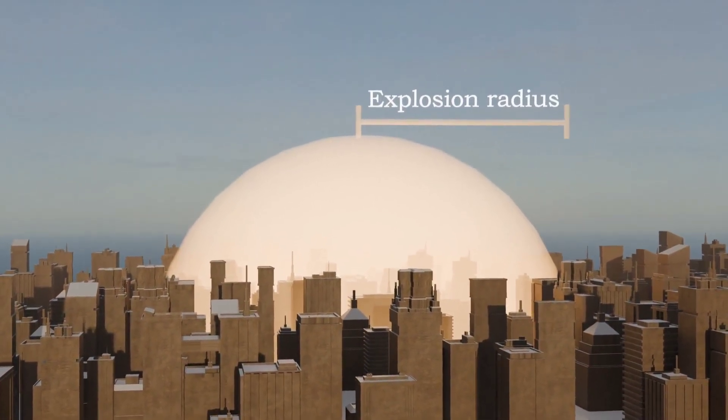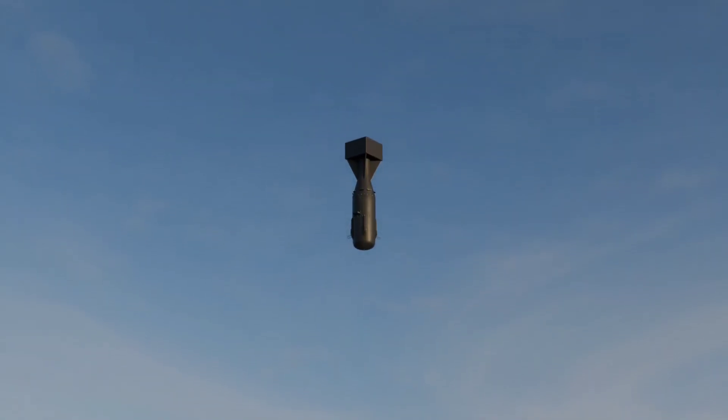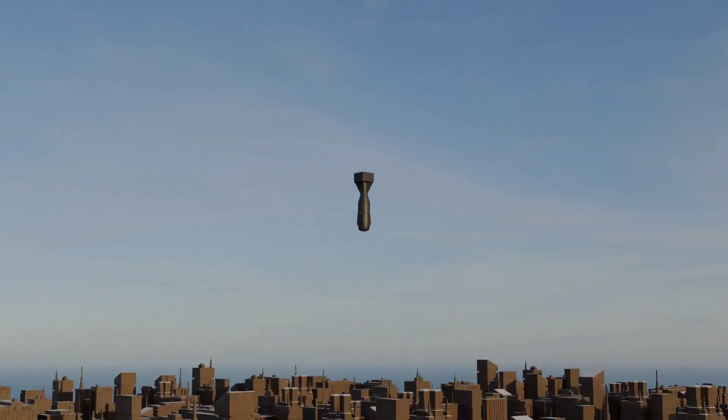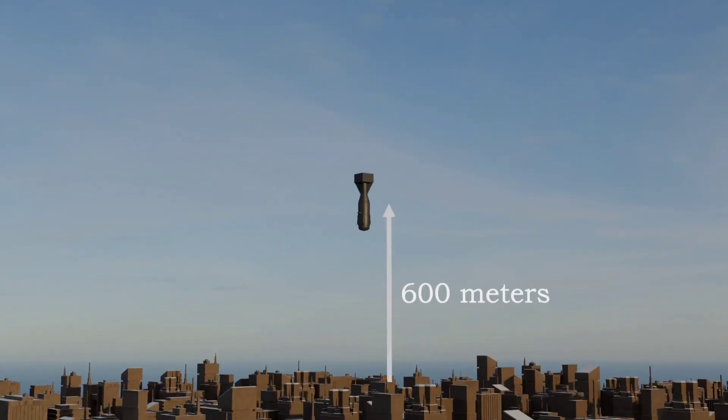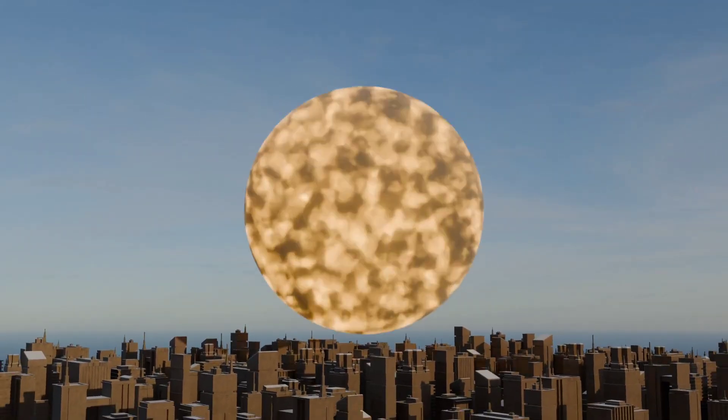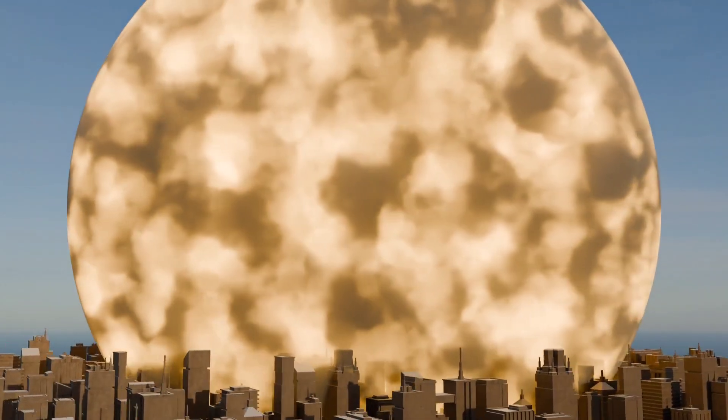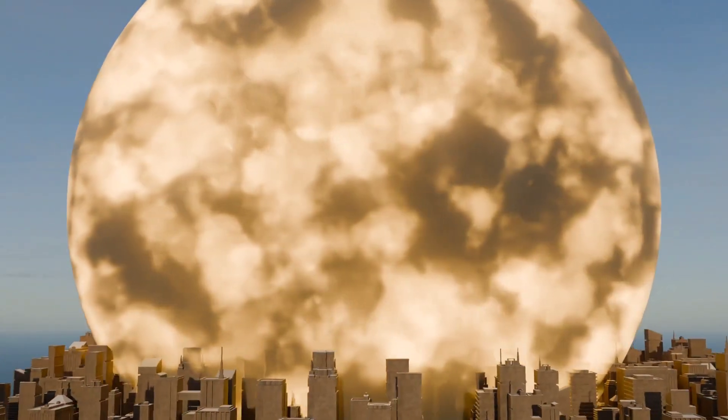Achieving this required pinpoint precision in the timing of the detonation. To accomplish this, the bomb was designed to detonate at around 600 meters above the ground. This altitude was crucial. It ensured that the explosion would spread over the widest possible area, maximizing its devastating effect.